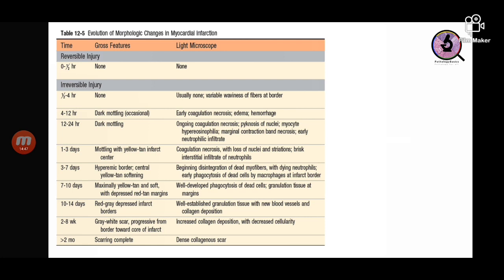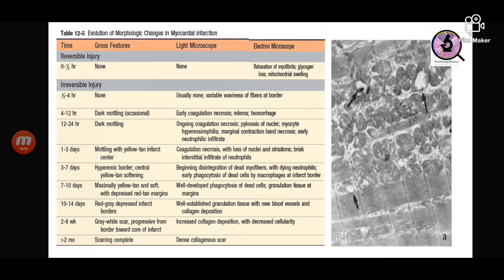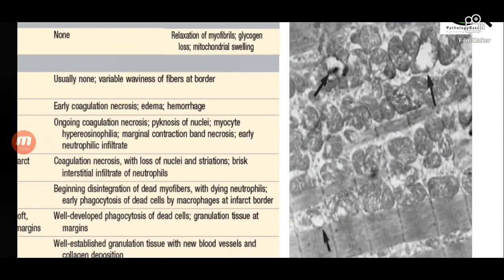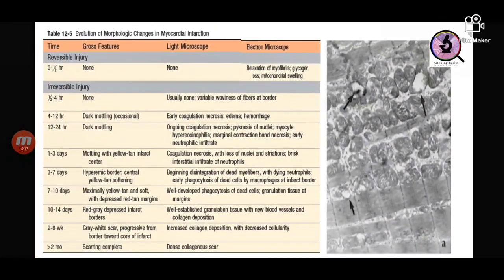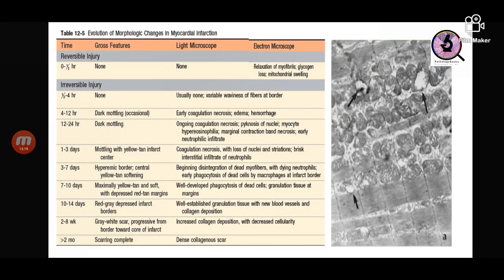The earliest microscopic change cannot be seen under the light microscope within half an hour. The earliest change is seen under the electron microscope: mitochondrial swelling, which is marked by an arrow in the figure. So the earliest electron microscopic change in myocardial infarction is mitochondrial swelling.